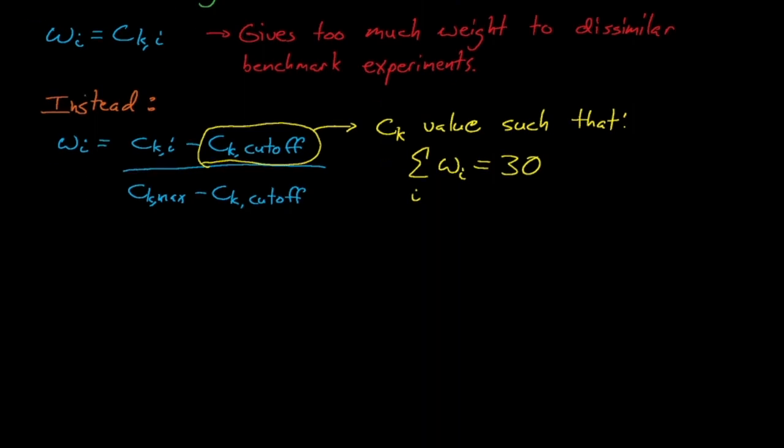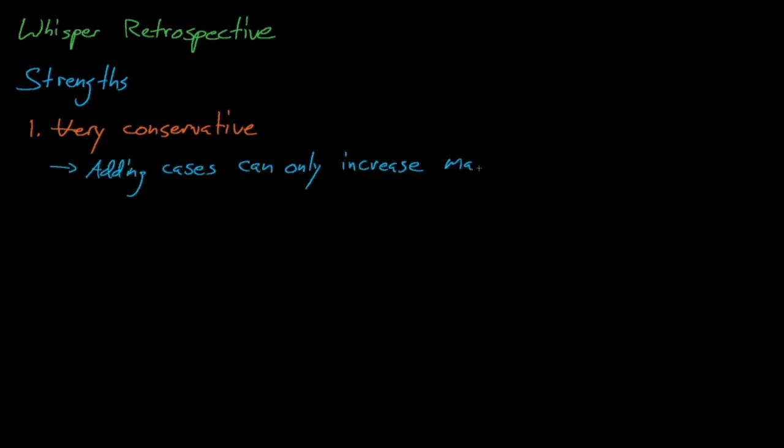So how does whisper compare to the other USL methods? One huge advantage to whisper is that it is inherently conservative. Our calculational margin is dominated by the most extreme biases, and adding additional benchmark experiments can only increase our margin. It will not make whisper less conservative.